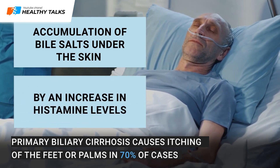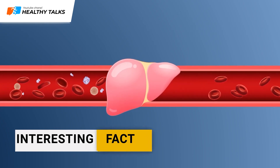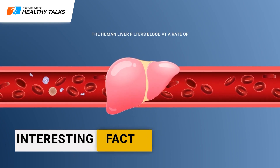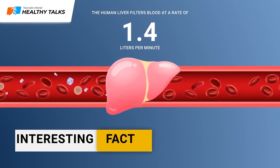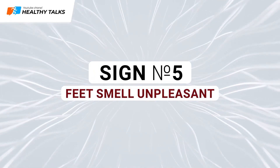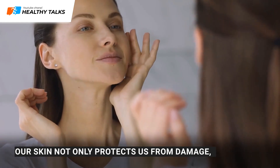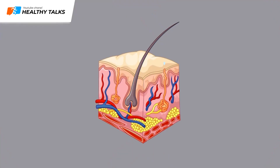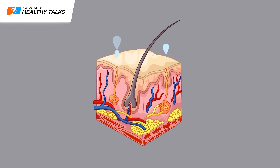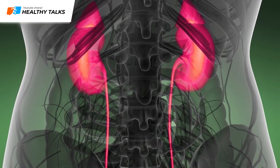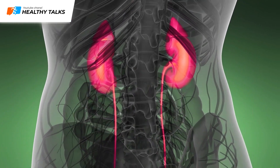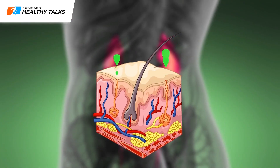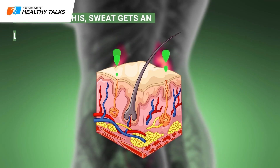The human liver filters blood at the rate of 1.4 liters per minute. Sign 5: Unpleasant smell of the feet. Our skin not only protects us from damage but also helps to remove poisons from the body. Toxins and metabolic products are released through the sweat glands. When the kidneys are not working well, the body tries to compensate by releasing even more toxins through the skin.